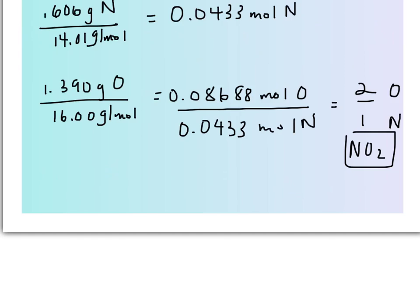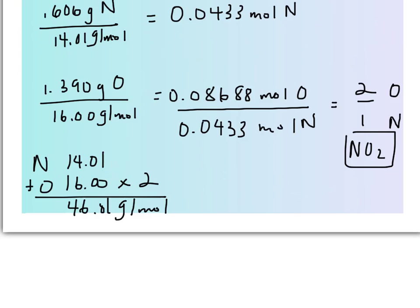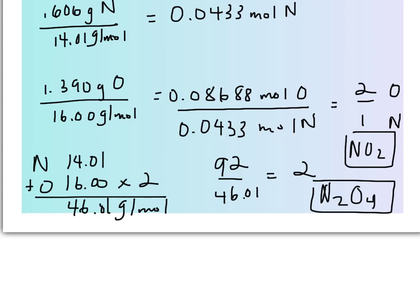Now for the molecular formula. We're going to compare the 92 grams per mole for the molecular formula to the molar mass for the empirical formula. The molar mass for NO2 is 46.01 grams per mole. Comparing that to the 92 grams per mole given in the problem, the molecular formula is twice as massive as the empirical formula, so we are going to double all of the subscripts. That makes our molecular formula N2O4.